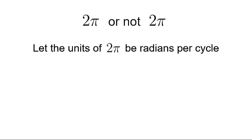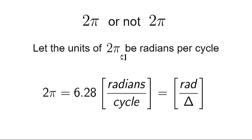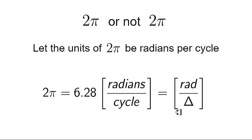This conversation begins with a mathematical statement: let the units of 2π be radians per cycle. When we do that, something interesting happens. So 2π equals 6.28 plus more digits, and I want the units of 2π to be explicitly written in the unit section of an equation as radians per cycle. In modified unit analysis, I write rad/cycle using the triangle symbol for cycle. I want to show you what happens when we let the units of 2π be radians per cycle.